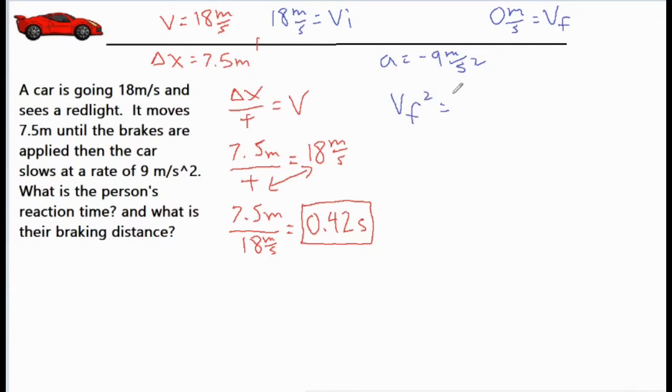VI squared, the acceleration, and the delta x. Okay, so we know the final velocity of zero, we know the initial velocity of 18.